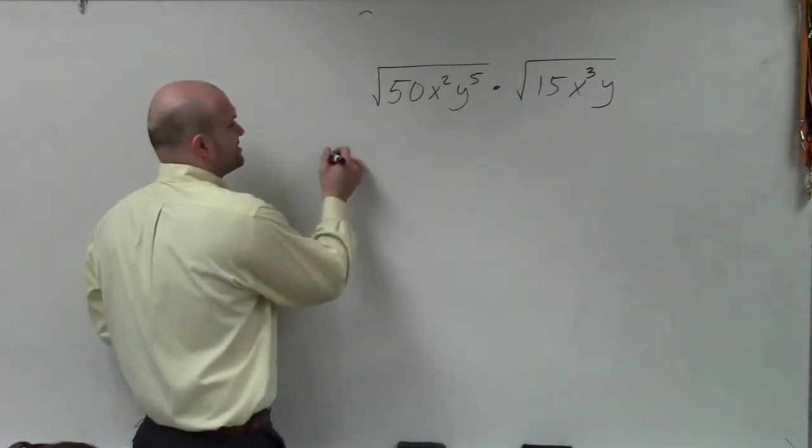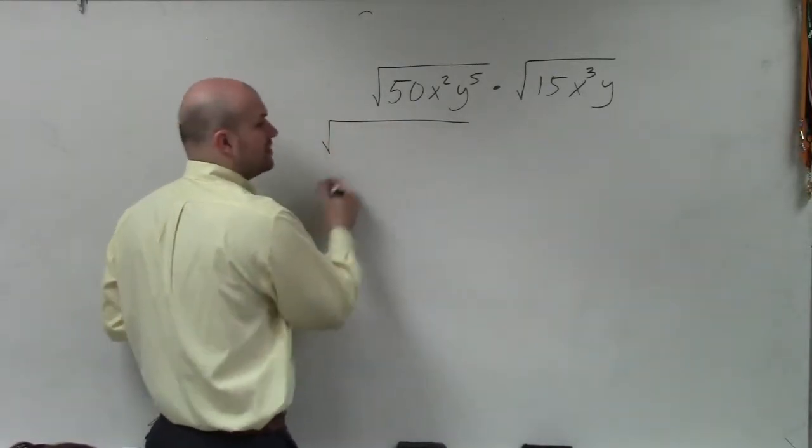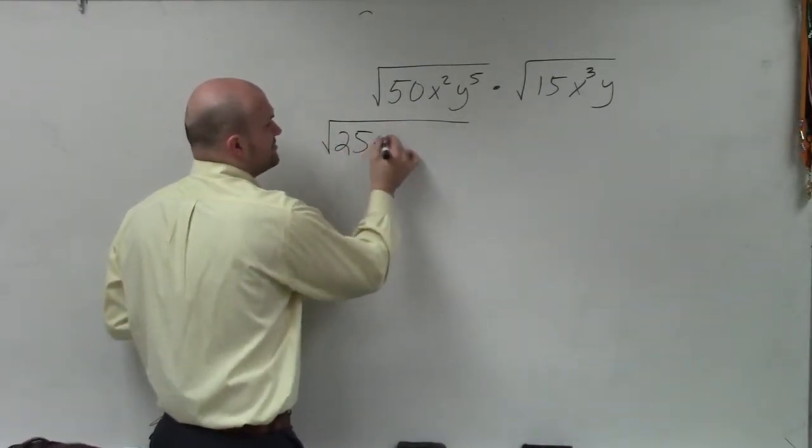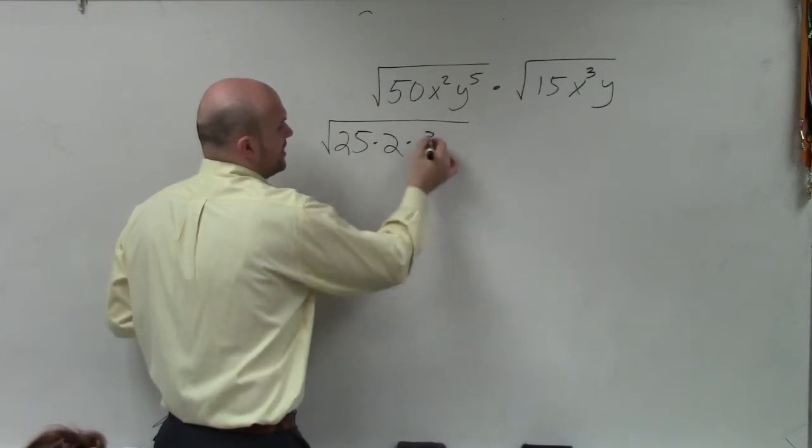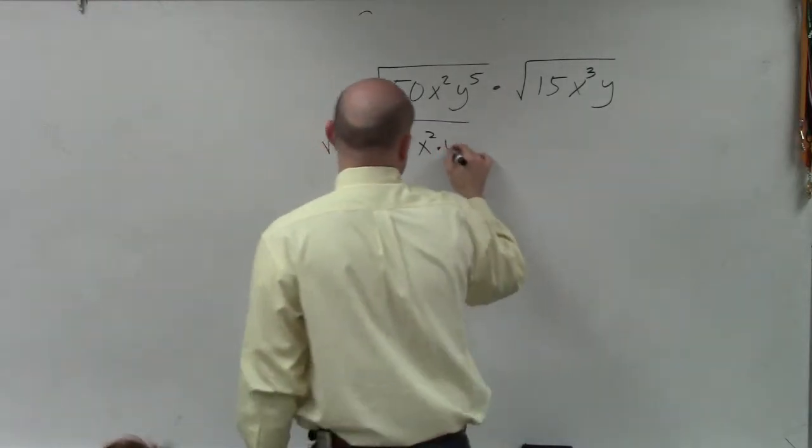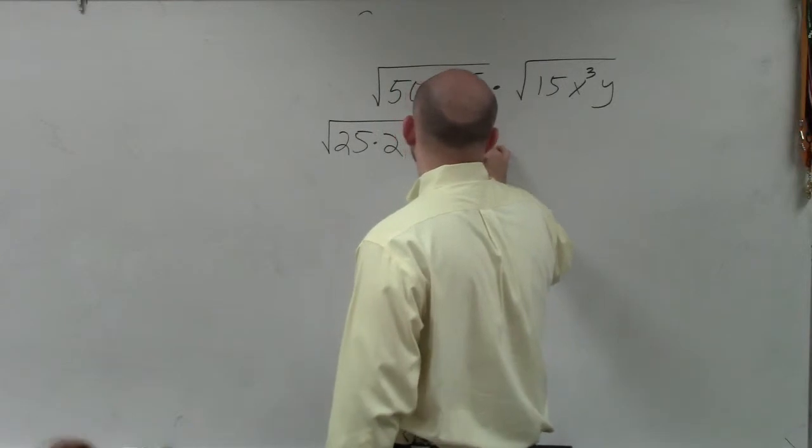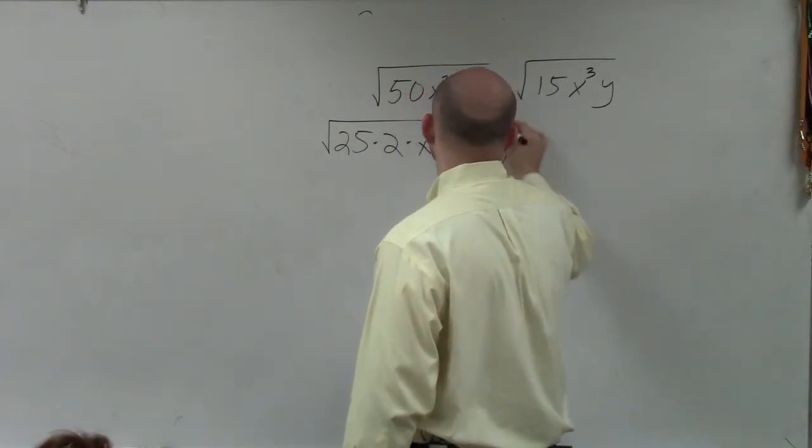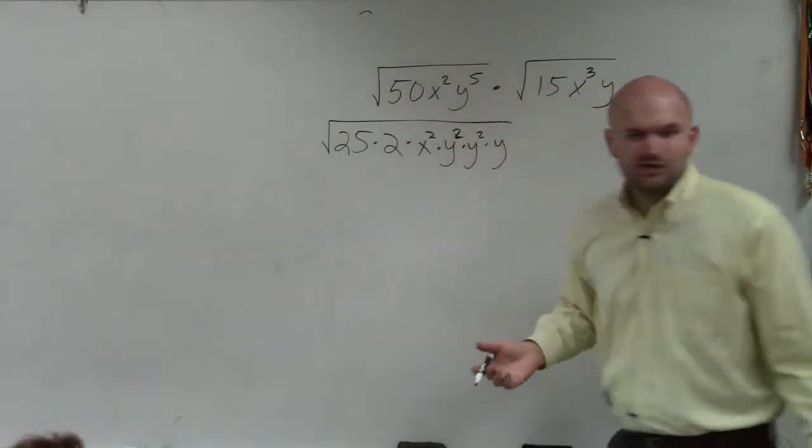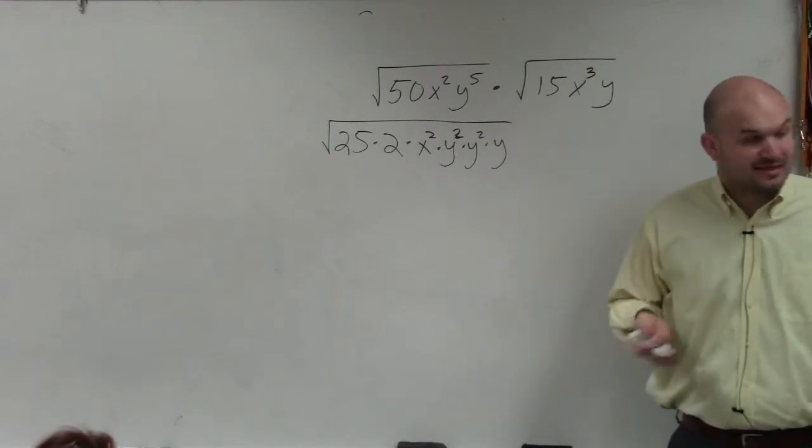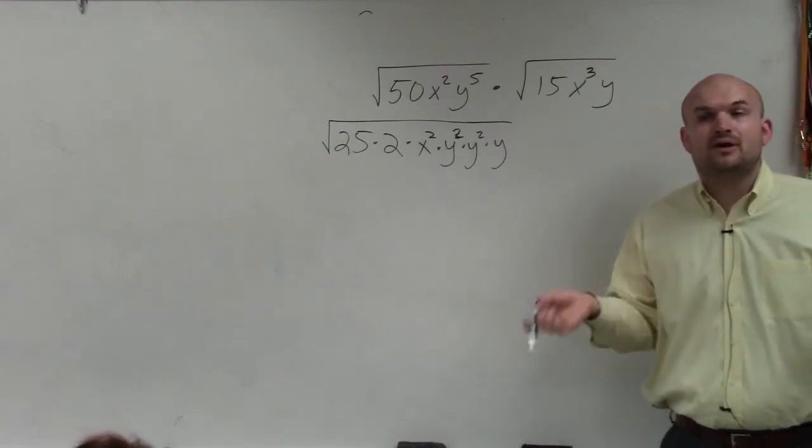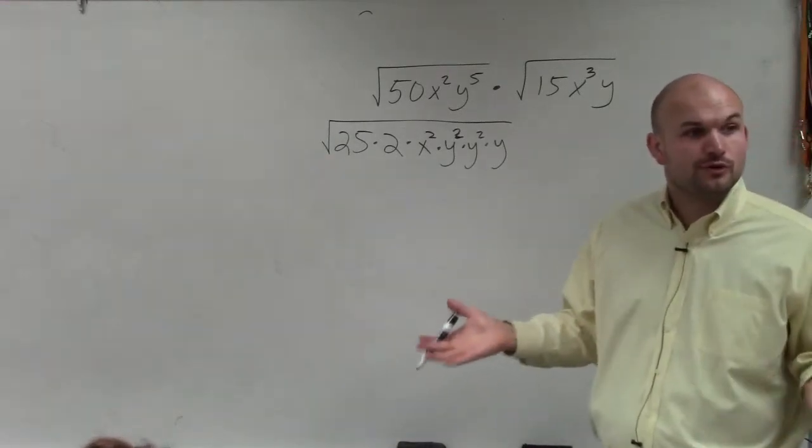But I like to rewrite this as numbers I know I can take the square root of. So this would be 25 times 2. I already have x squared. y to the fifth can be written as y squared times y squared times y. Would everybody agree that's another way to write the exact same? It's not the prime factorization, but I wrote it in a way that I can take the square root of terms.